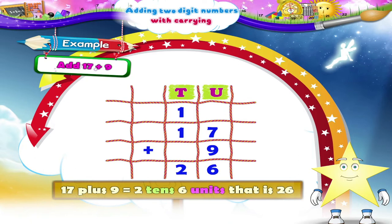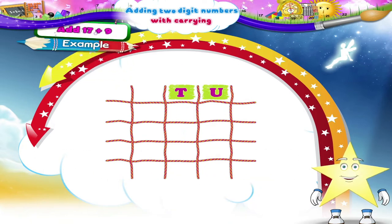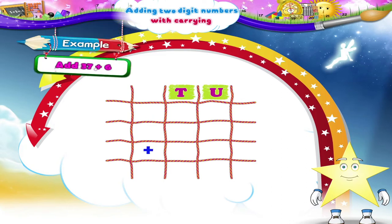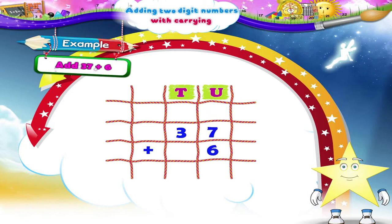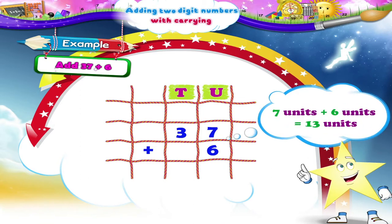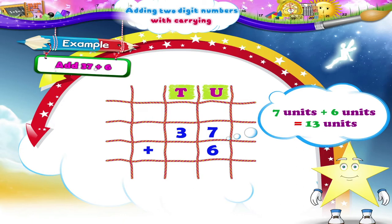Let us solve the next example. Add thirty-seven plus six. Can you solve this example, Starry? Yes, first let us arrange the numbers in the proper columns as shown. Now add the digits in the units place. What do we get? Yes, seven plus six is equal to thirteen units.